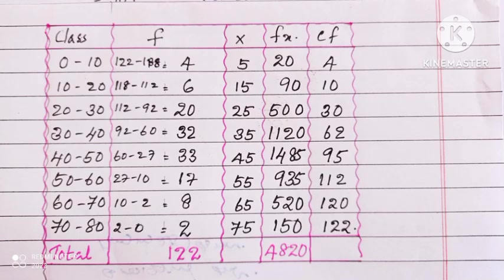For calculating mode, we are using the formula 3 median minus 2 mean equals mode. We have to make a table for finding all these. First column is class. The class is 0 to 10, 10 to 20, etc. Frequencies are 122 minus 118 equals 4, 118 minus 112 equals 6. Like that we are making the frequency. Next column is mid-value of the class. Last one is f into x and the last one is the cumulative frequency. Finding the sum of frequency that is 122, f into x sum is 4820.